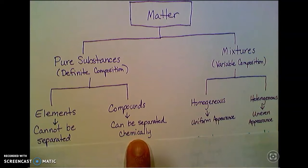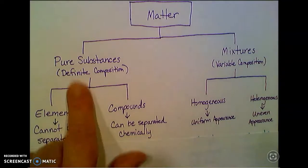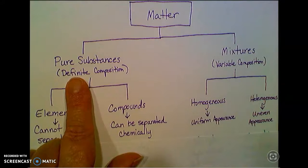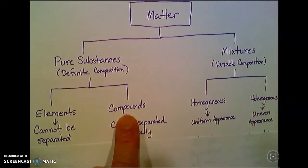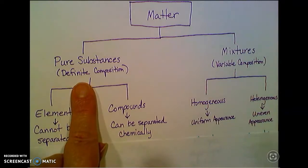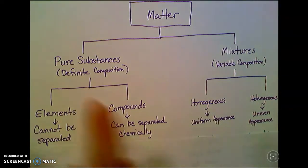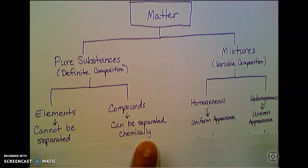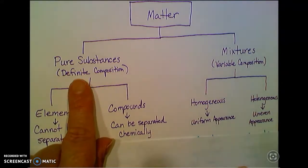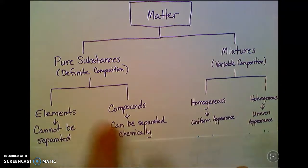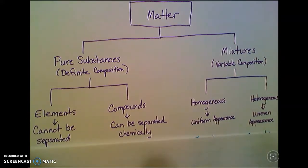Compounds can be separated from each other chemically. But let's go back to this definite composition idea. If you have a compound like water, it has a definite composition. It's always H2O. If you have a compound like glucose, you may remember that from biology, it's always C6H12O6. It's that 6 to 12 to 6 ratio. It is a definite composition, and that's what defines these substances.